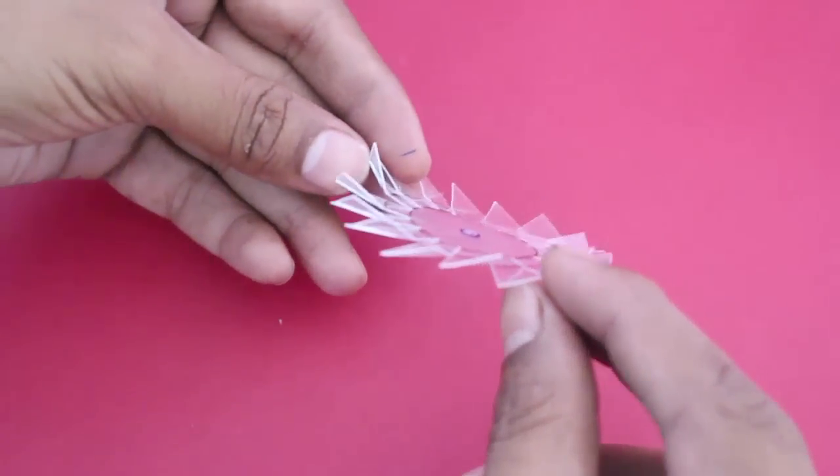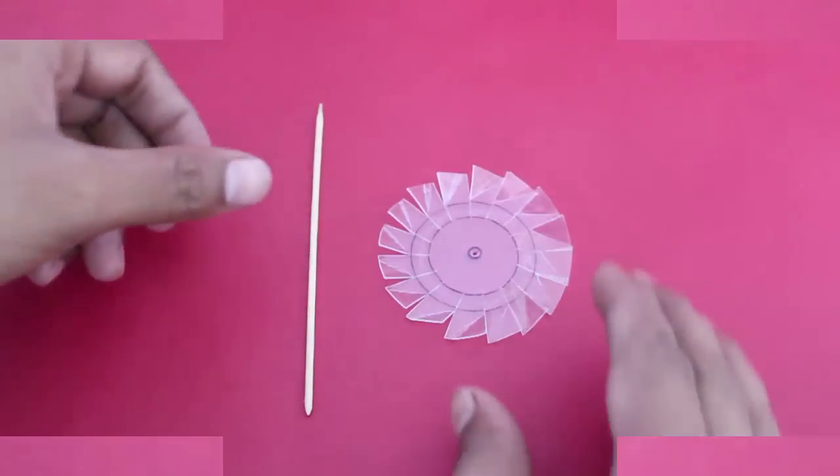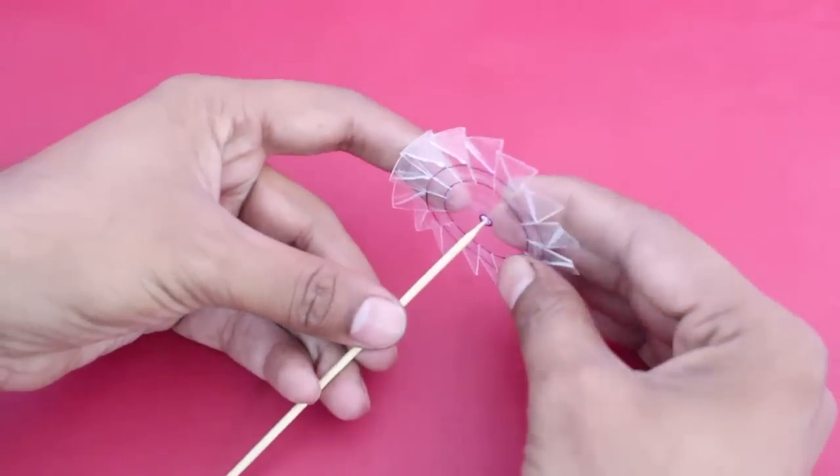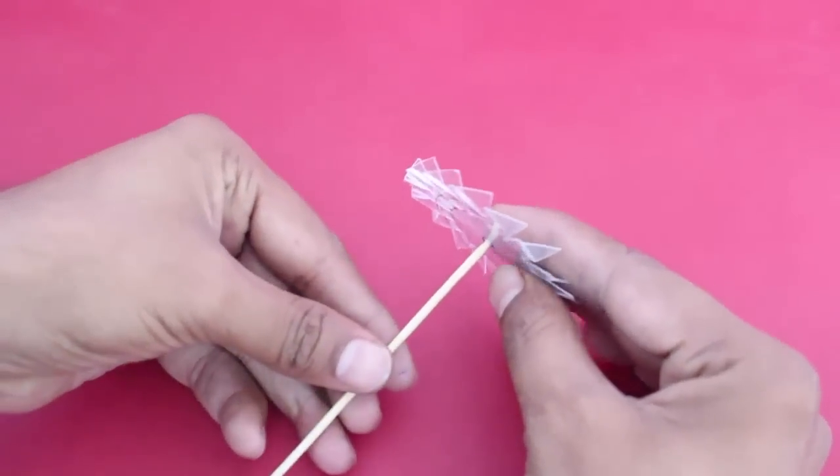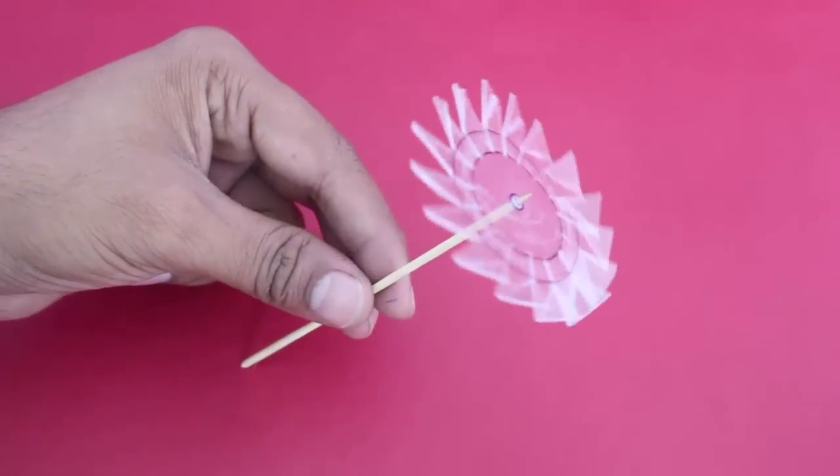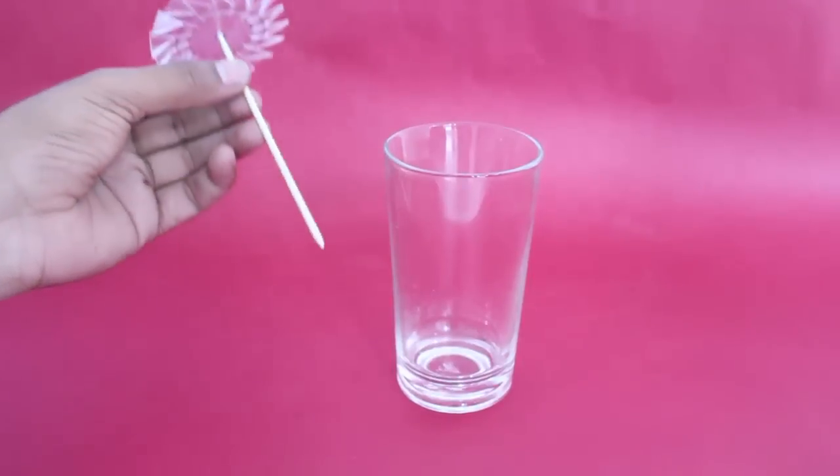Press fit the pointed end of the stick in the propeller. The stick should be a tight fit and not loose in the propeller. Then place the propeller and the stick in a glass.